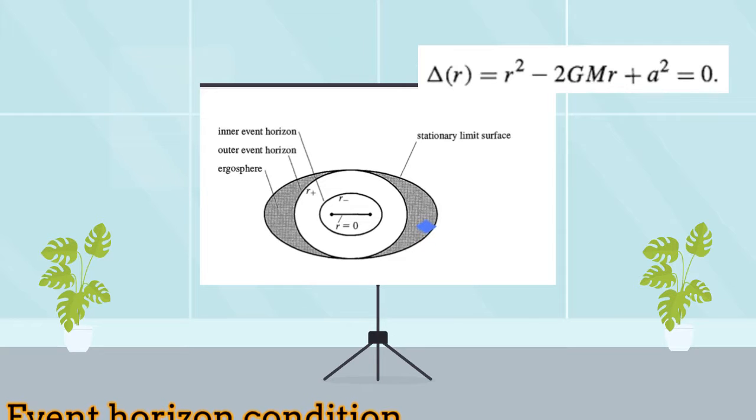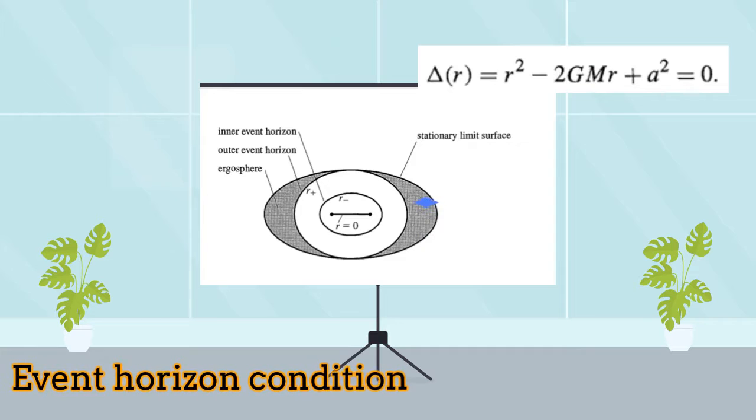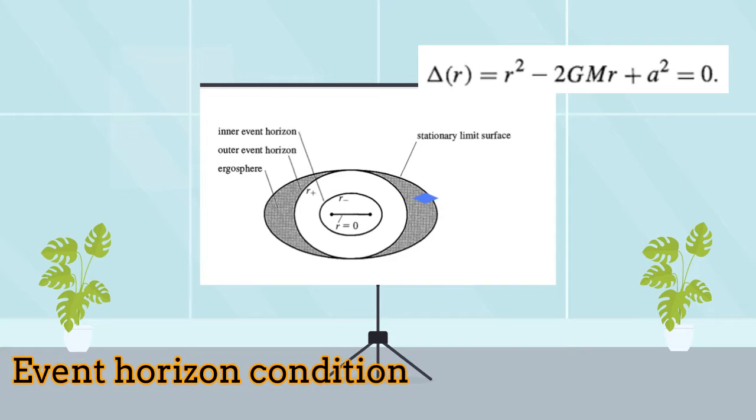The event horizon structure of this black hole suggests the existence of two event horizons, one interior and another exterior. The external event horizon is of interest, and interestingly, it is a space-like surface, which becomes null only at the poles of the black hole.